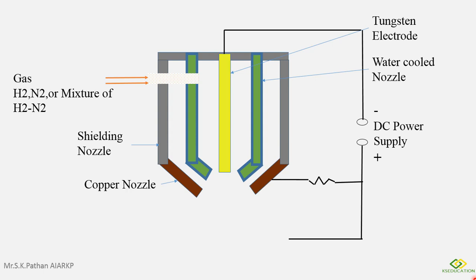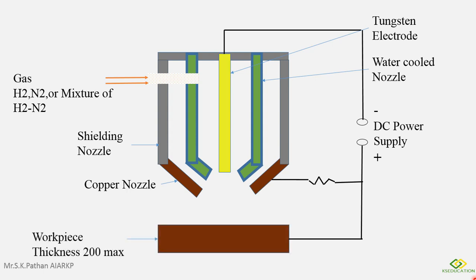When electrical current is supplied, the negative terminal is connected to the tool and positive terminal connected to the workpiece. And maximum thickness of the workpiece in plasma is 200 mm.